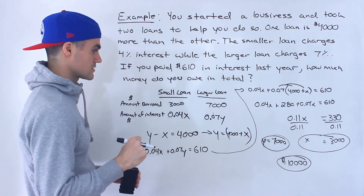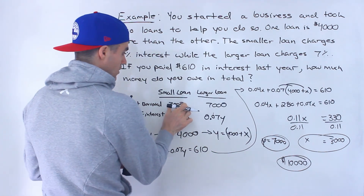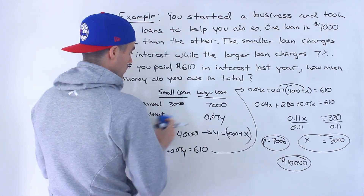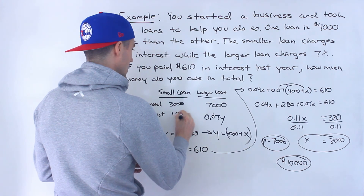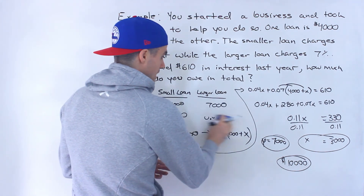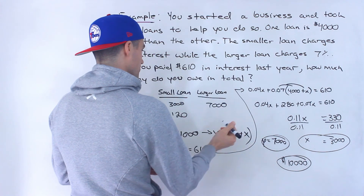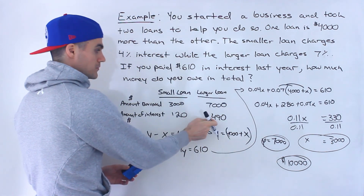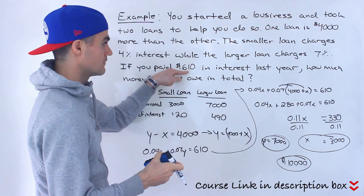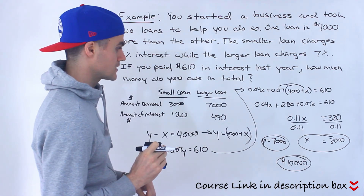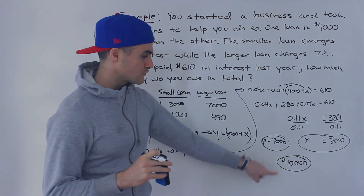That's the answer to this question, and you can check it. Notice 3,000 times 0.04 gives us 120, and 7,000 times 0.07 gives us 490. Then 120 plus 490 does indeed give us 610. So there are ways to check your answer as well. The final answer is $10,000.